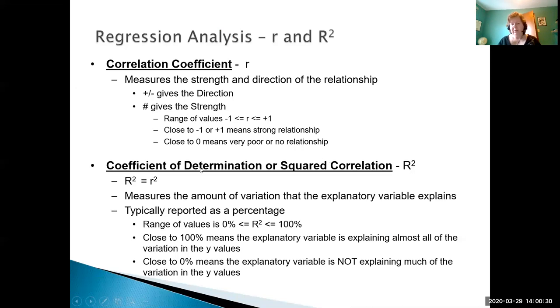We also have the coefficient of determination or squared correlation r squared. Remember r squared capital r squared is little r squared and it measures the amount of variation that the explanatory variable explains. It's typically reported as a percentage so it can vary between 0 and 100 percent. We're either explaining all close to 100 percent so mostly all the variation in y is being explained by the explanatory variable or if it's closer to 0 the explanatory variable is not explaining much of the variation in y.